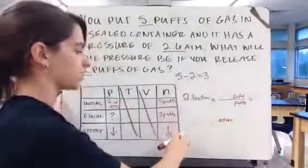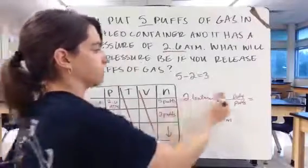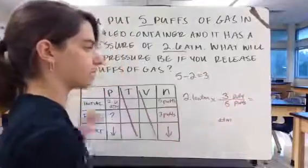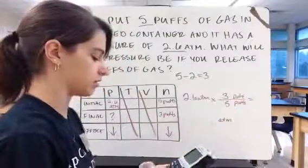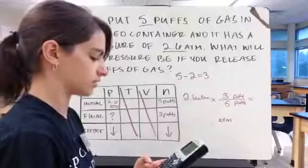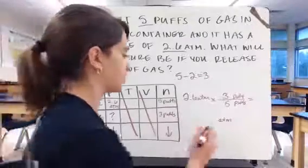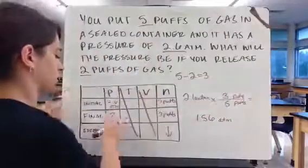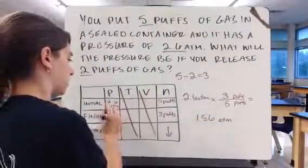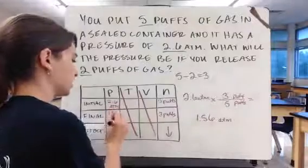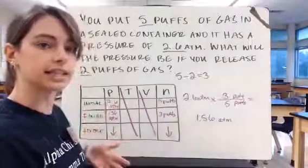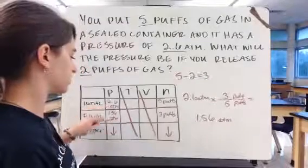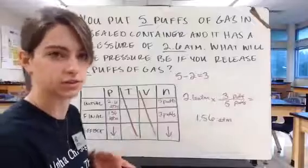So now we have to figure out where our numbers go. Well, if we want our pressure to go down, we need our smaller number on top and our bigger number on the bottom. So now if we do the math, we do 2.6 times 3 divided by 5, and we get 1.56 atmospheres. So that's what we could if we wanted to write in the box over here. And now the last question you're going to ask is, does that answer make sense? Well, we said our pressure was going to go down. It went from 2.6 to 1.56, so yes, it did. That answer is correct.